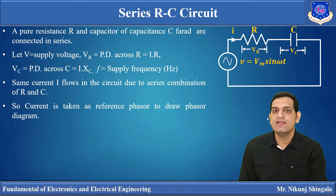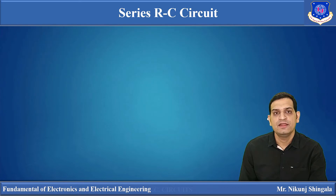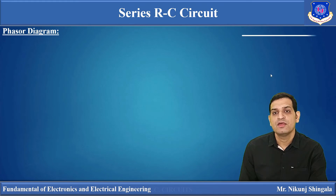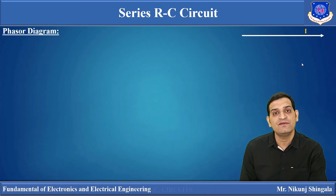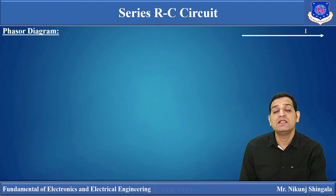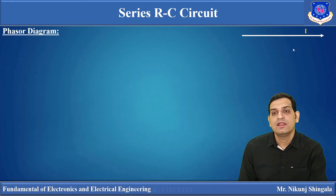Moving towards the phasor diagram of the series RC circuit: the circuit consists of two elements, so there will be three quantities — current I, VR, and VC. We need to take one quantity as a reference. Since current is common for both resistor and capacitor, current will be taken as the reference phasor. Alternating quantities are represented by phasors because representing multiple alternating quantities simultaneously as waveforms becomes difficult; phasors make this much easier.